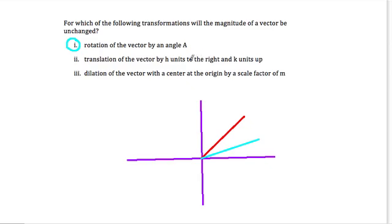In this first one, you're rotating the vector by an angle A. Well, if I have a vector here, and I rotate it around, I can keep it the same length. I'm just changing its direction. So that one will leave the vector unchanged.